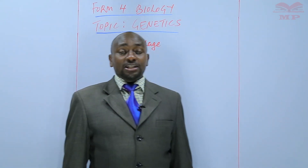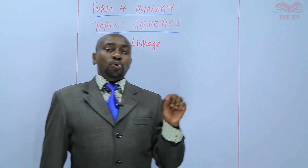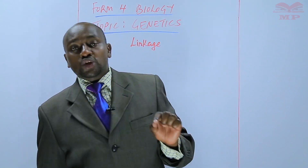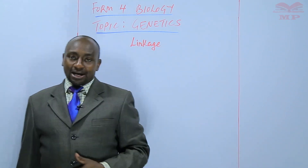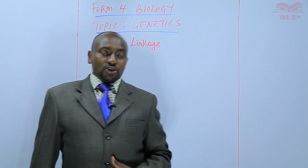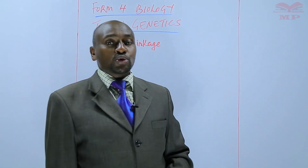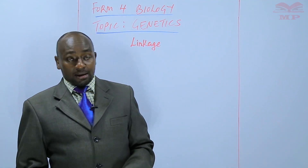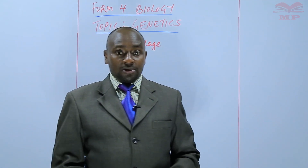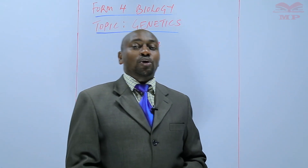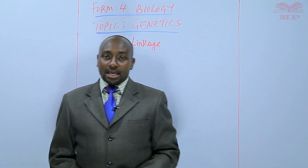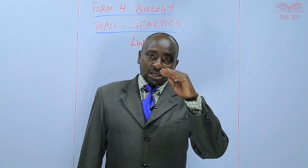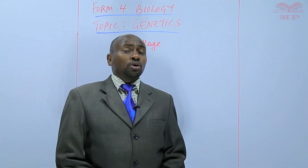That is why we say the position within a chromosome where a gene is located is called the gene locus. So a chromosome has several gene loci. We don't call them locuses, but we call them loci. One is a locus, many are loci.